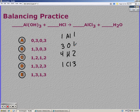One aluminum, three chlorine, two hydrogen, and one oxygen on the products. So I'm going to fix my chlorine first which gives me six hydrogen and three chlorine.